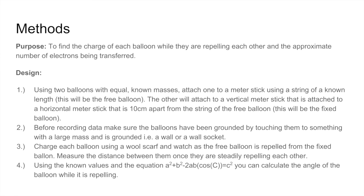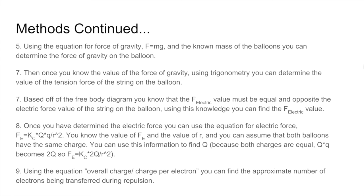Using the known values in the equation a squared plus b squared minus 2ab cosine of c equals c squared, you can calculate the angle of the balloon while it is repelling. Using the equation for force of gravity, f equals mg, and the known mass of the balloons, you can determine the force of gravity on the balloon.